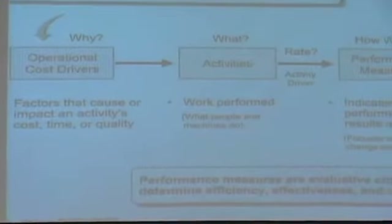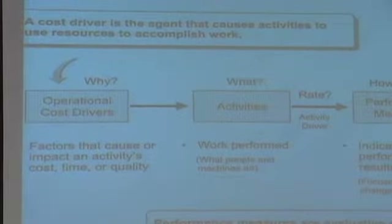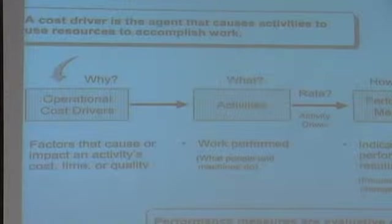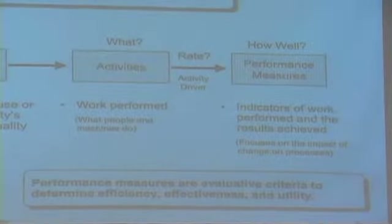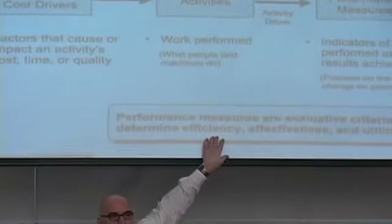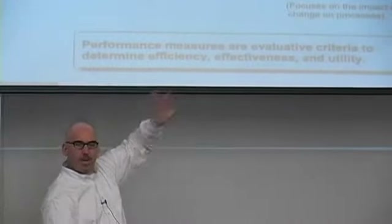So here we've got activity-based management, left to right. I usually talk about this stuff down at the bottom: efficiency, effectiveness, and utility. We can create performance measures for all three of those things. What is efficiency, Aubrey? Just utilizing your time better so that you can produce more. I would say doing the right things - using your time wisely, not wasting time, not taking your mind off the task, staying on task and working.